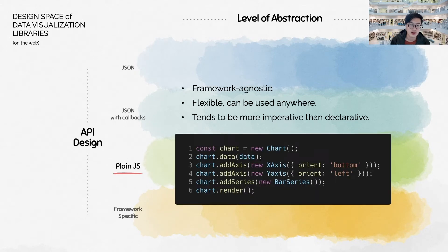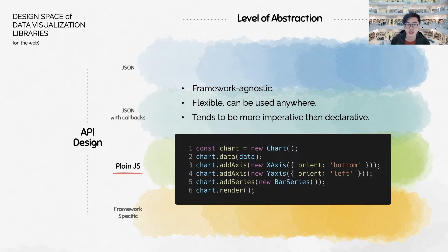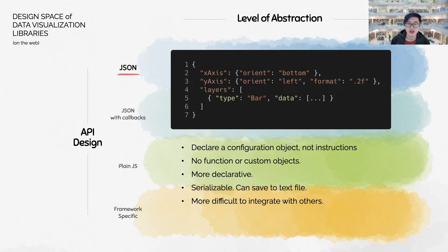A large number of libraries offer plain JavaScript API — for example, D3. They do not depend on specific frameworks such as React, Vue, or Angular, so they can be used anywhere. The code, however, tends to be more imperative, or closer to machine instructions, than declarative, or closer to the output that humans want to see. Some libraries such as Vega declare their entire API in a single JSON configuration, which is also framework-agnostic. JSON doesn't accept any function or custom object, enforcing a fully declarative API. The configuration can also be easily serialized and stored as text files or used with command line tools, which is a nice bonus.